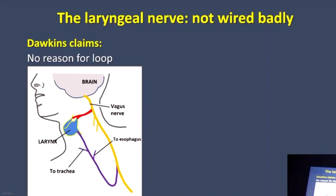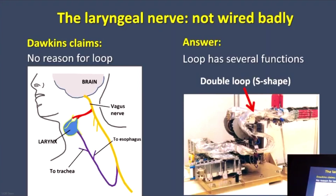This subject is very close to my heart — literally — because it goes down there. I had to design loops on my spacecraft, and the loops I designed were almost identical in size to the human laryngeal nerve. In fact, if Richard Dawkins had come to my first design lecture, he would hear me say that wiring systems normally have loops.